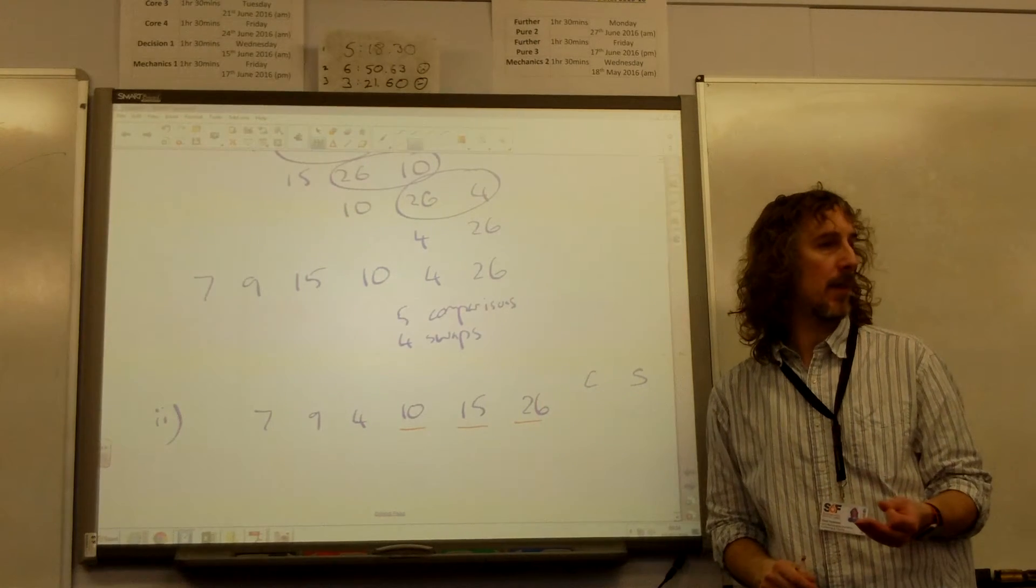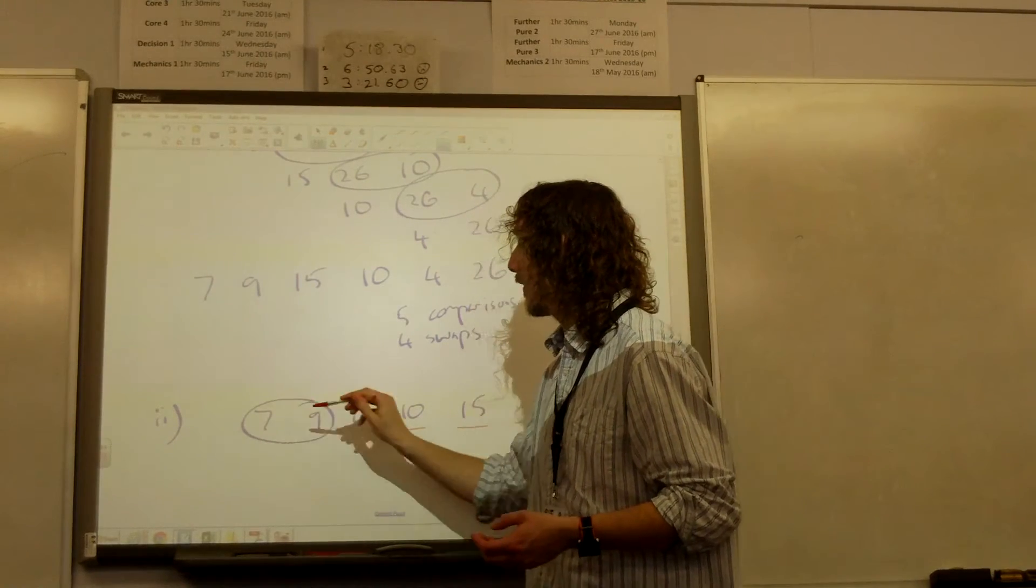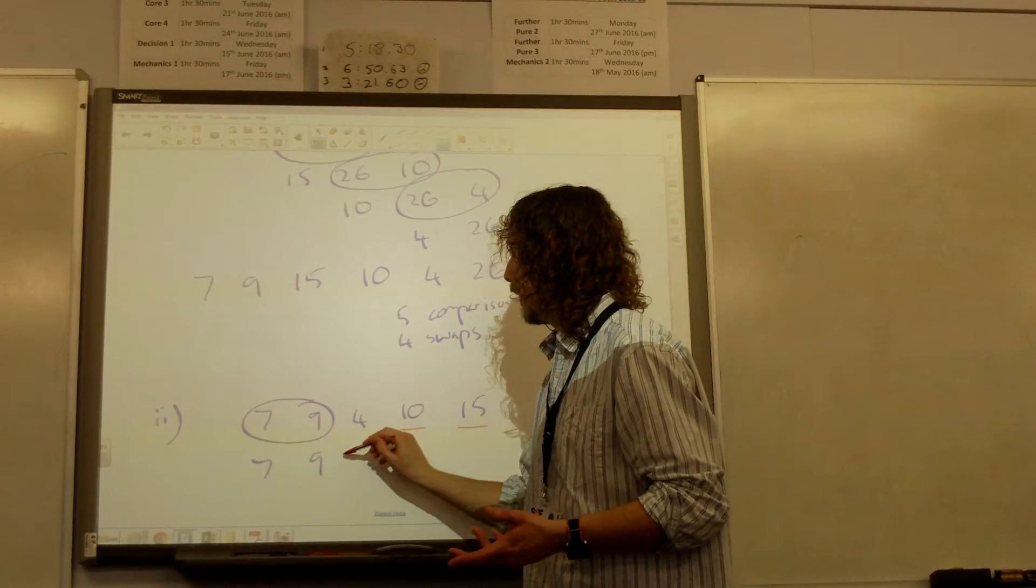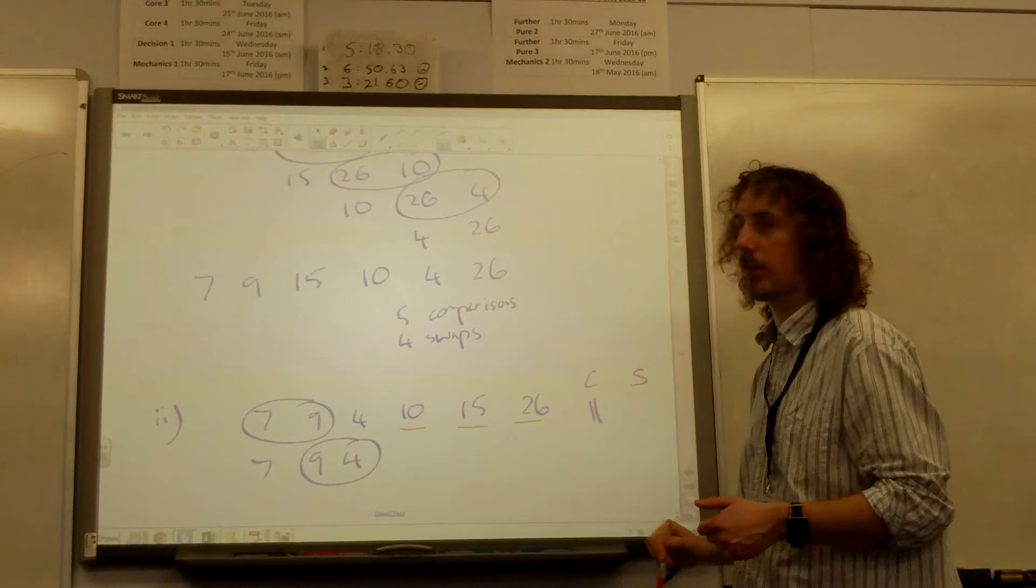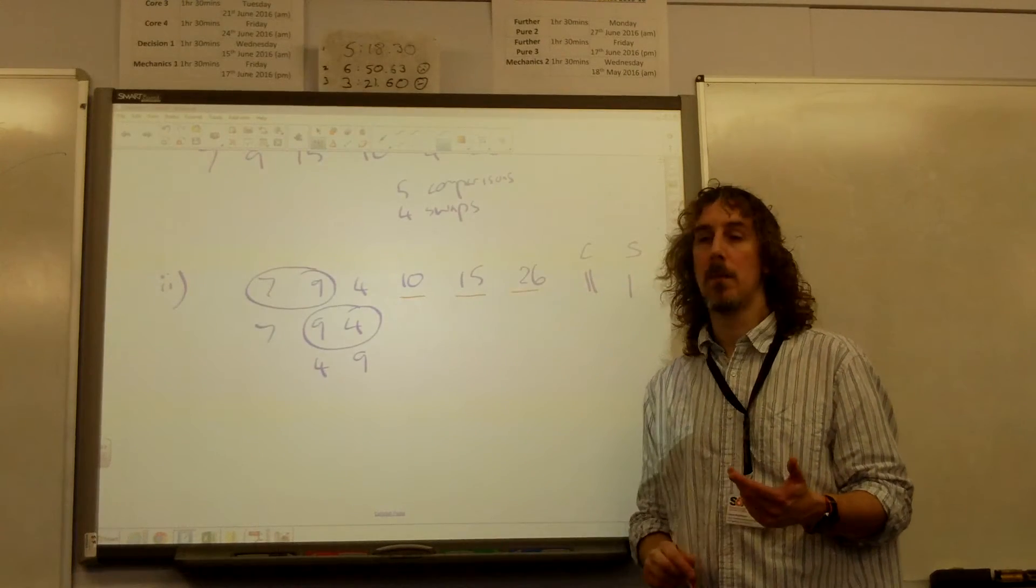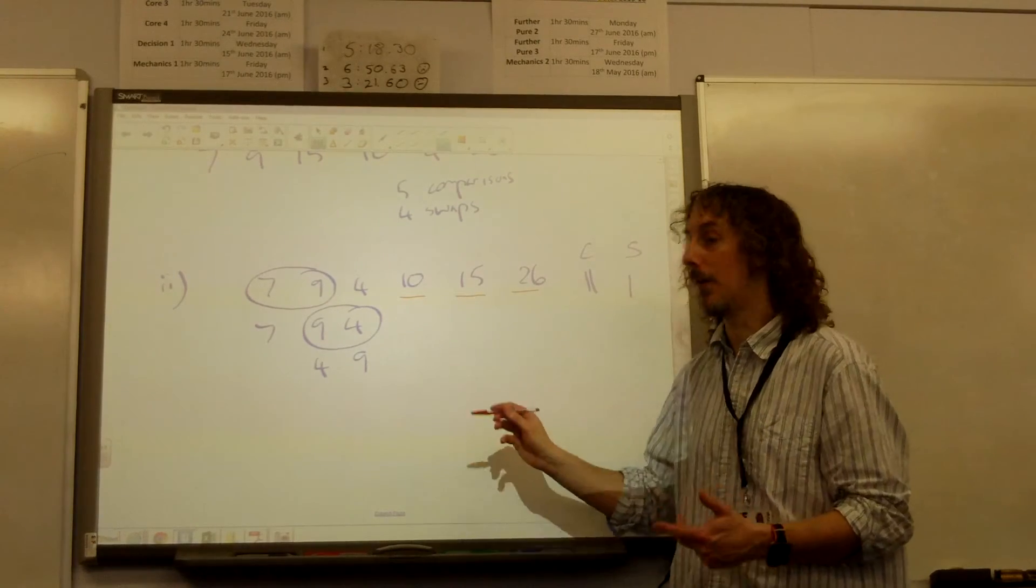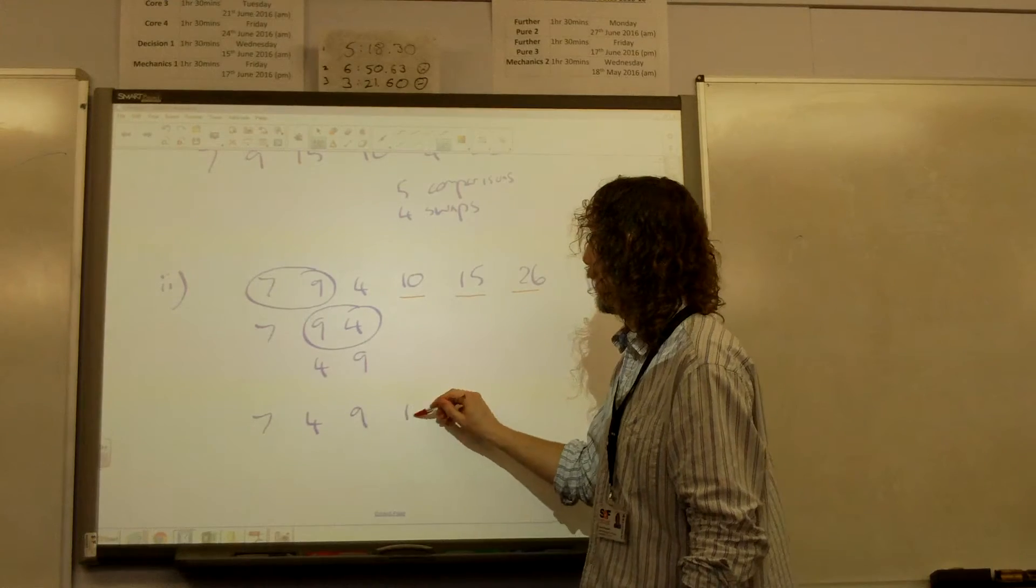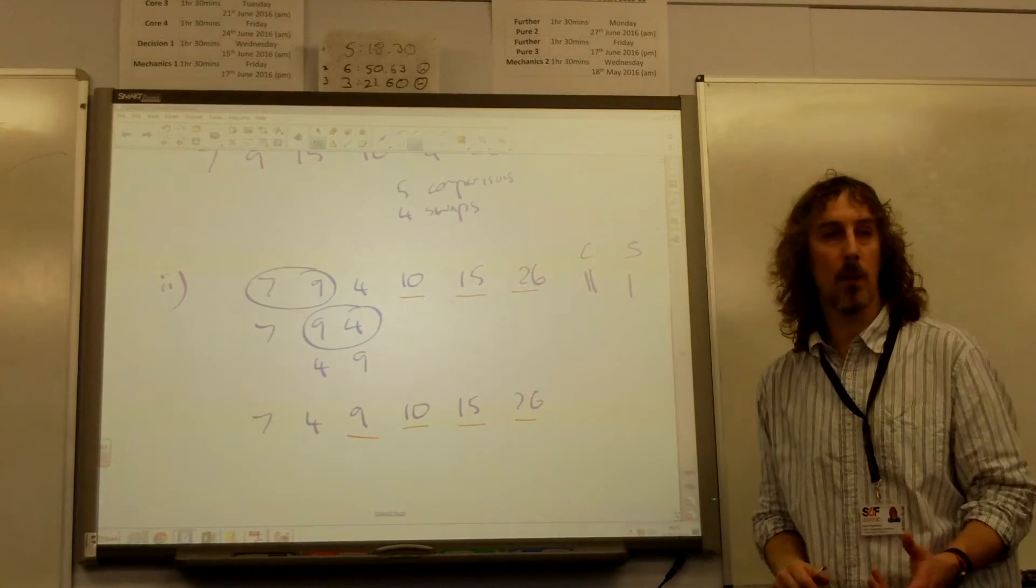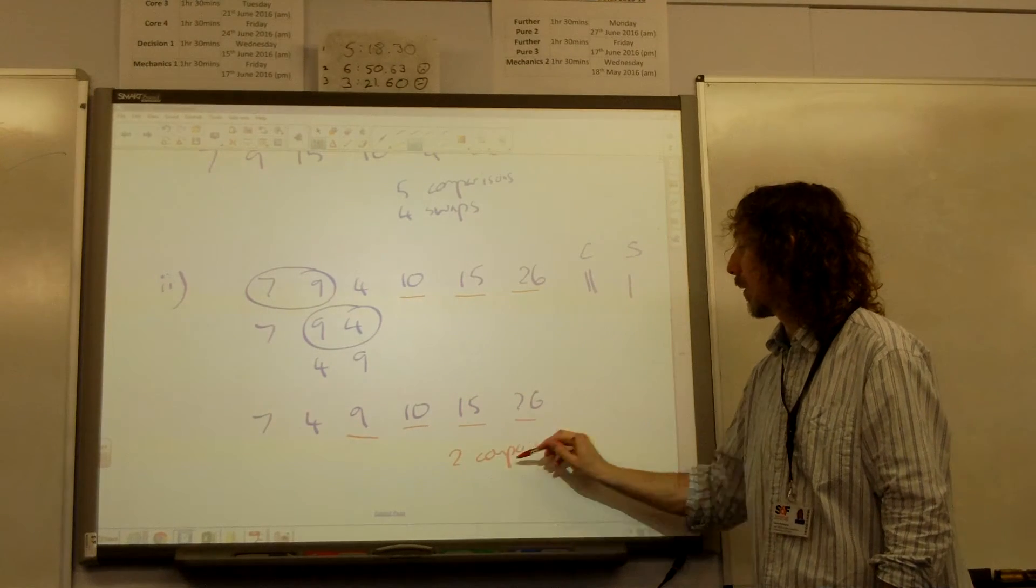After three passes, this is what the list looks like. So those three numbers must have been in the correct places. So the fourth pass begins with comparing 7 and 9. That's one comparison. It wouldn't result in a swap. And then it compares 9 and 4. That's the second comparison, that would result in a swap. And that's a stop. Because we already knew that the others were in the correct positions. So at the end of that pass, the list was 7, 4, 9, 10, 15, 26. And we knew that those four numbers were in the correct place. We did two comparisons and one swap.